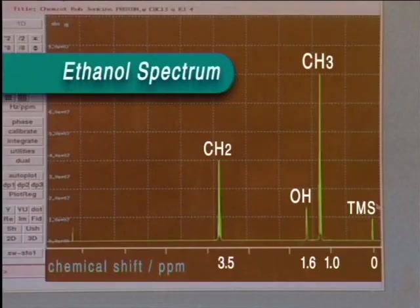A closer look at the spectrum shows that the peaks are in fact split into groups of peaks, called multiplets, with particular patterns. This is called spin-spin splitting. It is due to the influence of the magnetic field of adjacent protons.